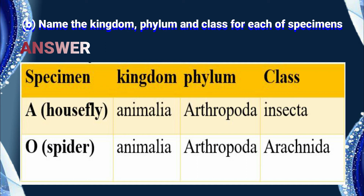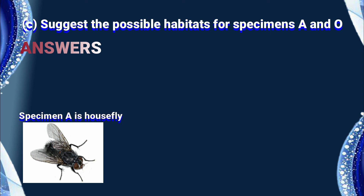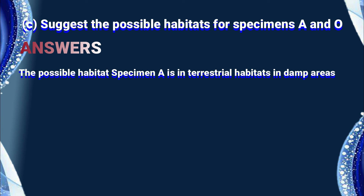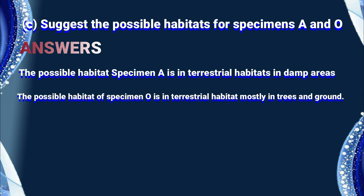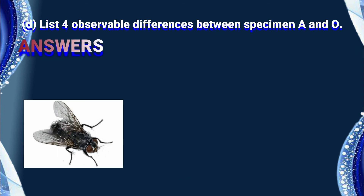You can answer this question by using a table or by naming as the questions have been stated. Question number three answers — suggest the possible habitats for specimen A and specimen O. The possible habitat for specimen A, the housefly, is terrestrial habitats, mostly in damp areas. The possible habitat for specimen O, the spider, is terrestrial habitats, mostly in trees and on the ground.